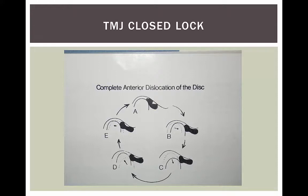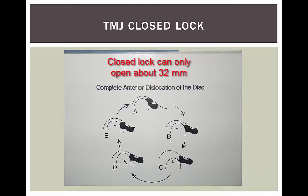Another type of dysfunction of the Temporal Mandibular Joint is called a closed lock. This is where the disk is anteriorly displaced and never gets into place. These people can't open very wide. Normal maximum opening is about 48 millimeters plus or minus. People who have a closed lock can only open about 32 millimeters. A way to test this is to take two fingers — if you can only fit two fingers in your open mouth, that's a closed lock. If you can fit three fingers when opening wide, that's normal opening.